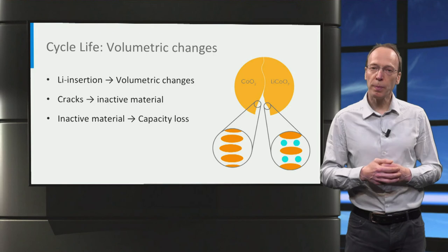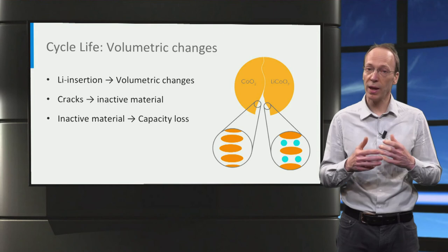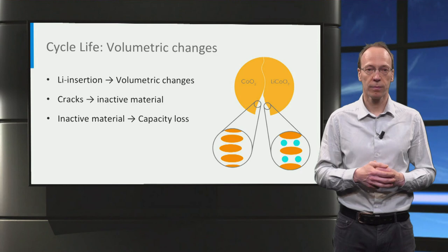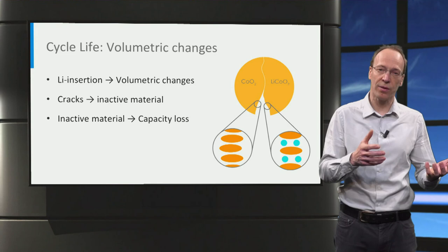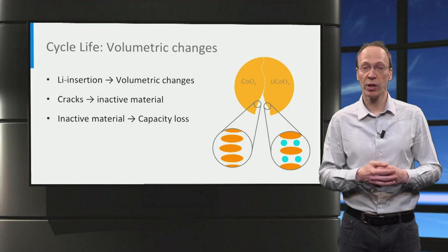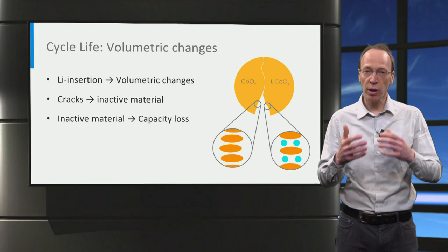Another aspect that can lower the cycle life of lithium-ion batteries is the repeated volume changes of the electrodes upon lithium insertion and extraction during battery cycling. During cycling, this may result in cracks in the electrode material. As a consequence, the electrode material may become isolated from the current collector, and thereby becomes inactive, resulting in capacity loss over cycling. Depending on the specific electrode material, large structural changes typically play an important role in the cycle life of lithium-ion batteries.